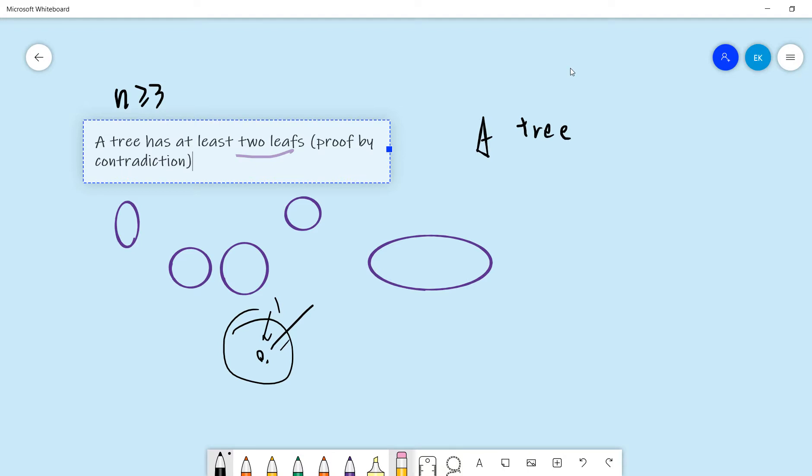Basically, the tree with n nodes has n minus one edges. So this is the definition for tree.